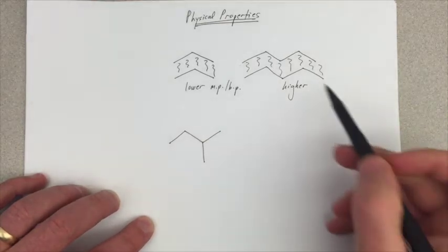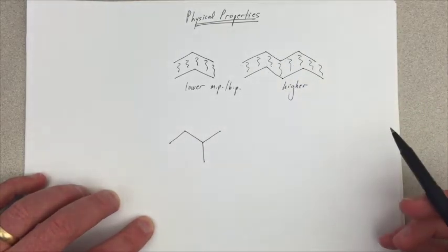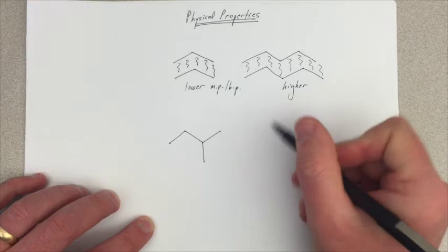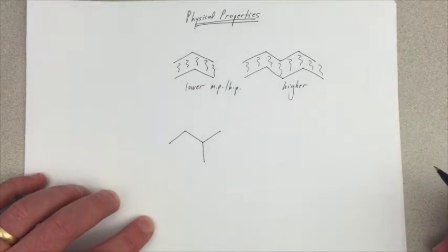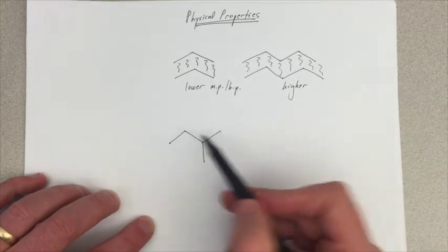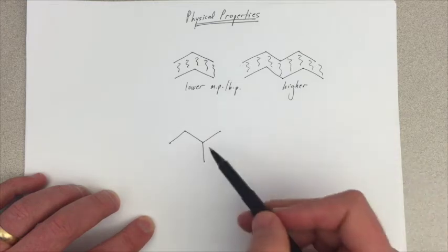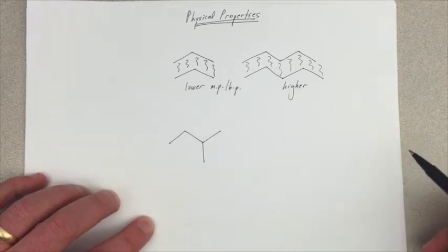So let's have the same number of carbons, just a constitutional isomer of pentane, and compare it to regular pentane. We've got the same number of carbons, same number of hydrogens, we just have this branch in place here.